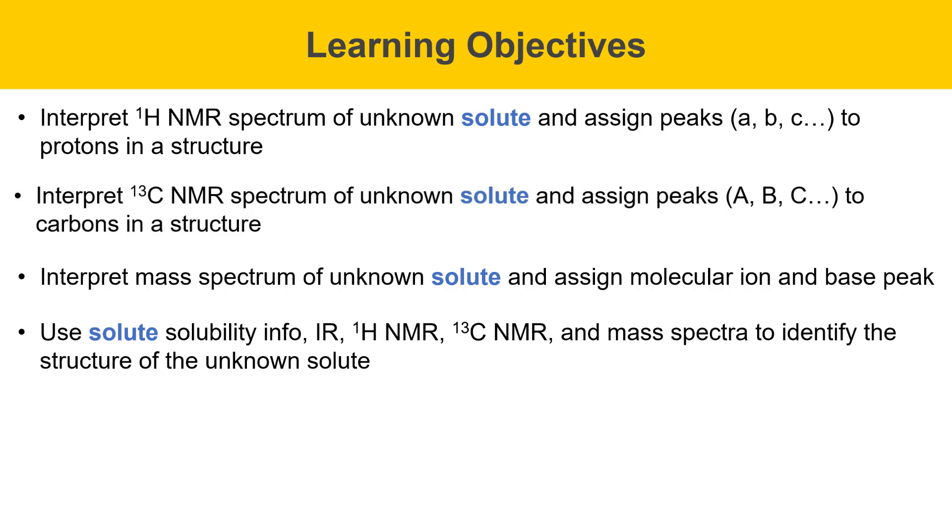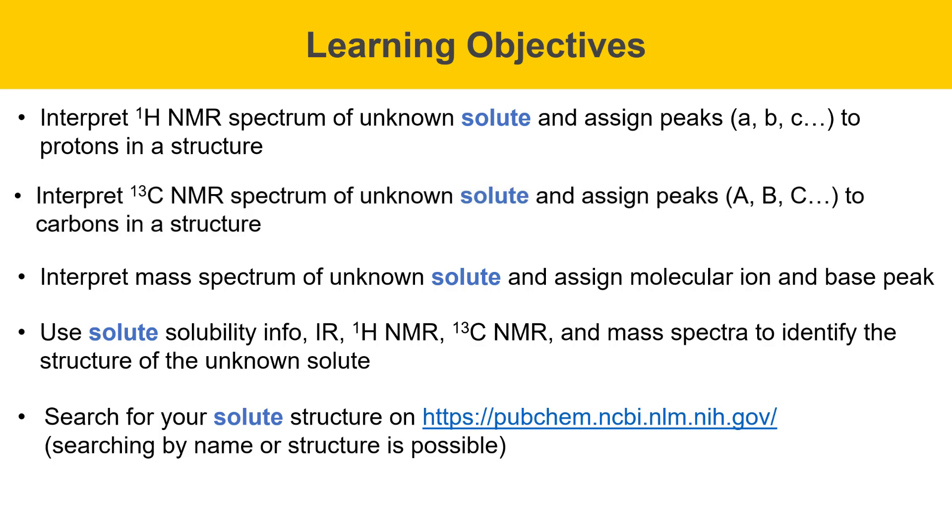You'll use solute's solubility info, IR spectrum, proton NMR spectrum, and carbon-13 NMR spectrum, along with the mass spectrum, to identify the structure of your unknown solute. Then you'll search for your solute structure on the website pubchem.ncbi.nlm.nih.gov to determine its name and its physical properties. Then you'll find its literature melting point or boiling point on that site and compare it to your experimental value, and hopefully they match pretty closely.